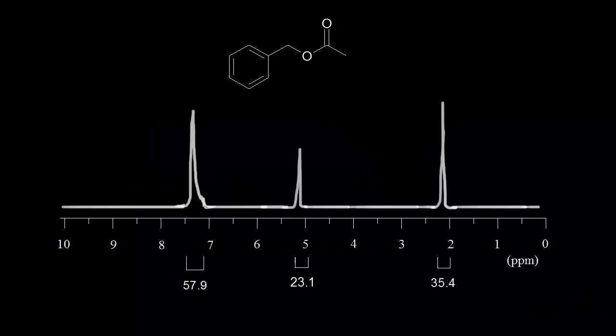Integration is the area under each signal, and it tells us the number of protons in that signal. Here we have the proton NMR spectrum of benzyl acetate, including the integration values.